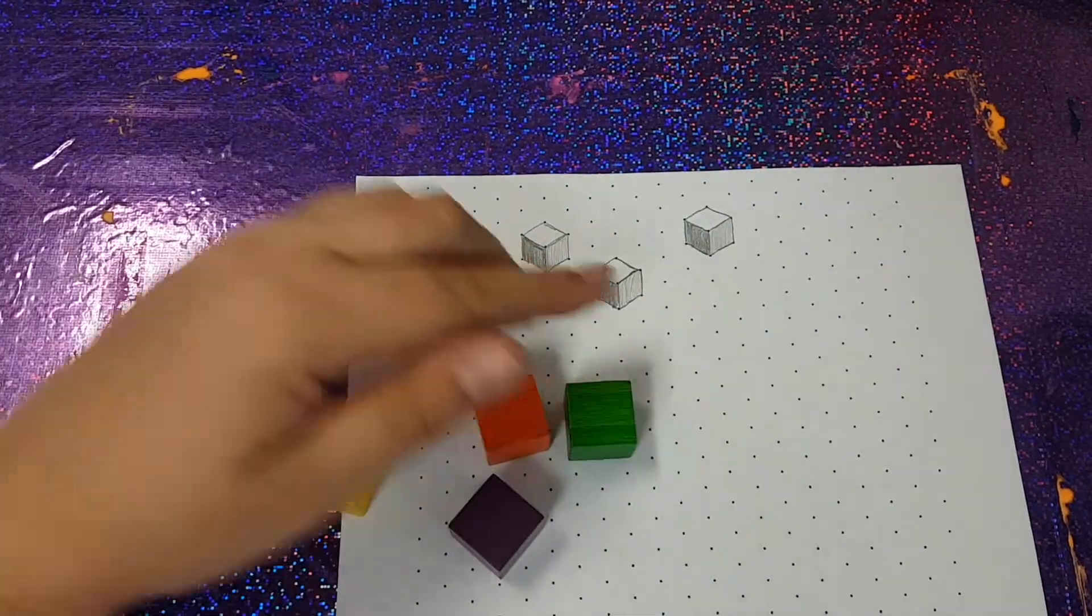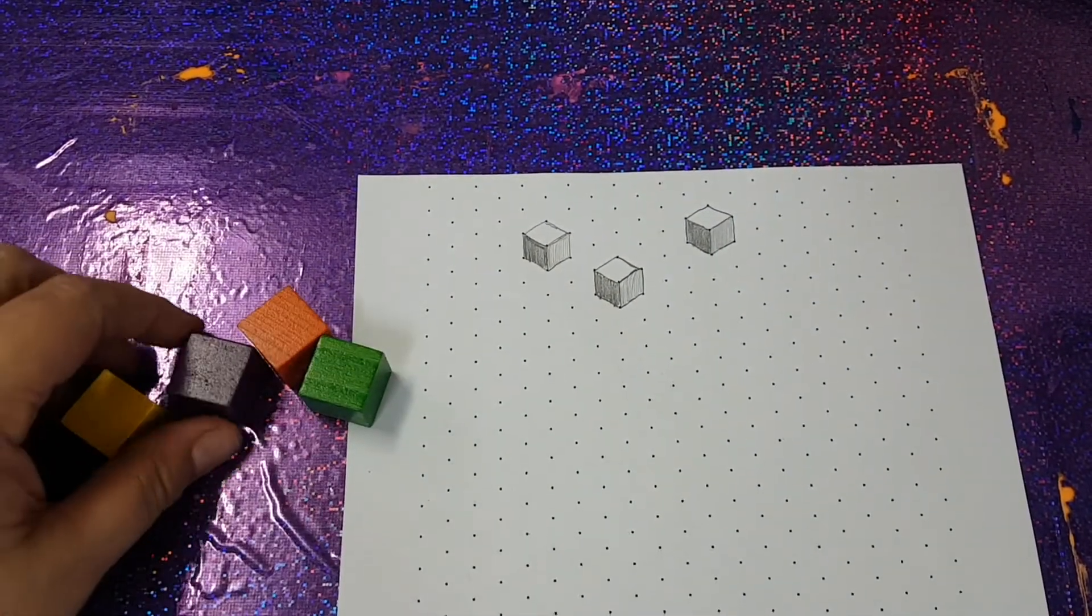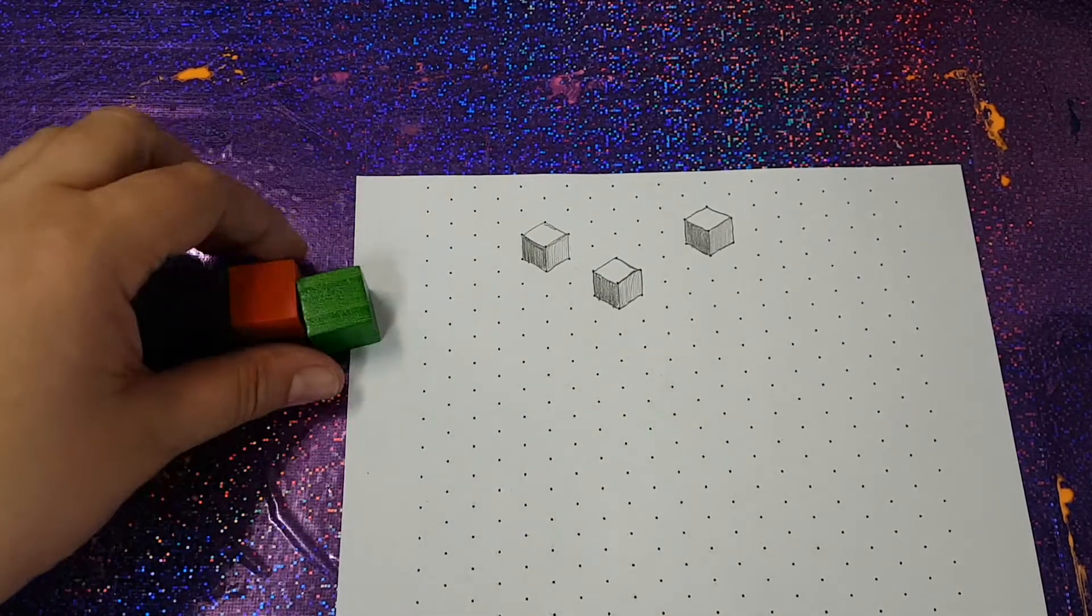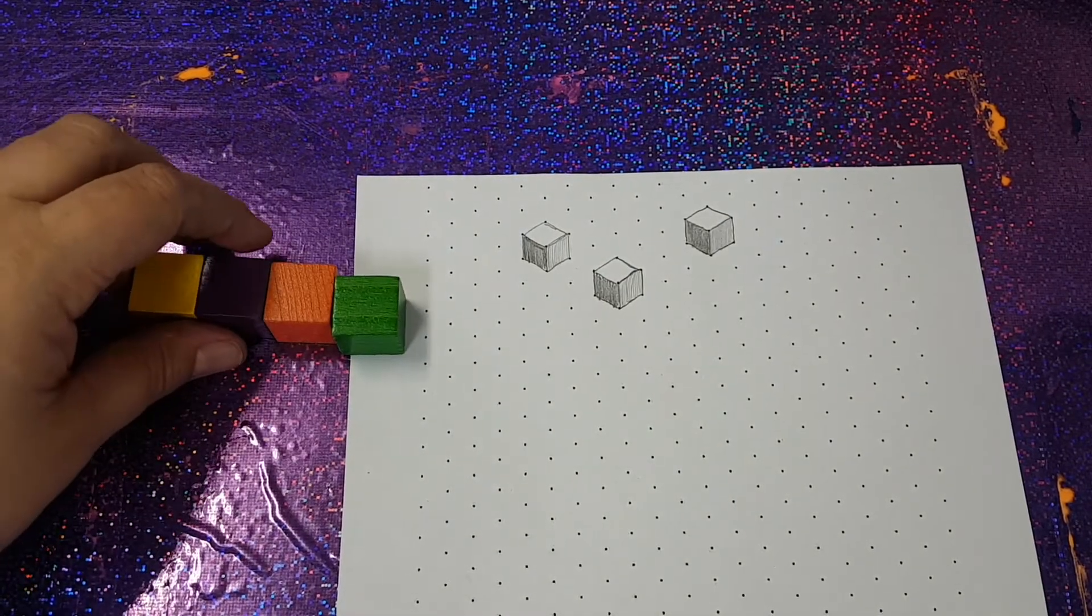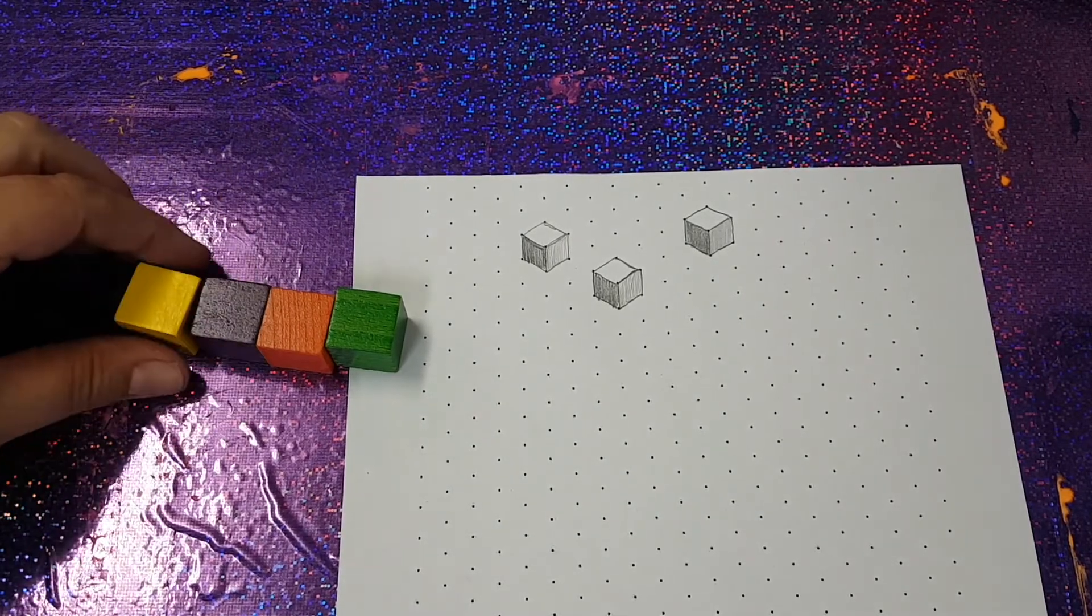Okay so what I want you to do with your partner is grab four cubes between you. And what I want you to do is work out how many different ways can you put these together. Well there's one way. I can line them up this way.